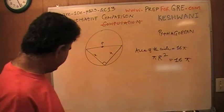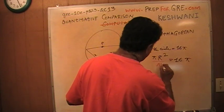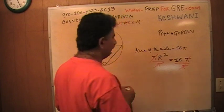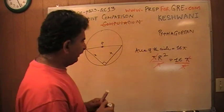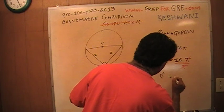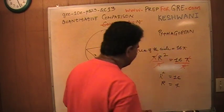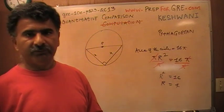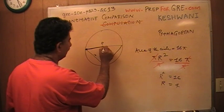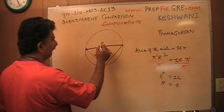If that equals 16π, and I divide both sides by π, π cancels out. I end up with r² = 16. That tells me that the radius of the circle is 4. If the radius is 4, then from here to here, which is the diameter, is 8.